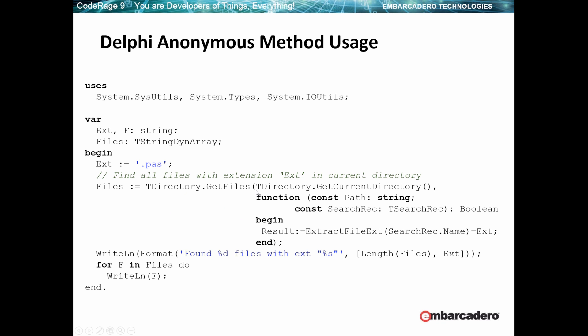That's the example here — you just pass a little function right inside as you're calling getFiles. You have a little function, and that function does a little test. In this case, this function will check that the extension matches a particular extension — pass files. The beauty of this is locality. The function you're writing is right there. You don't have to write a separate callback like the way we used to use function pointers before, with a class and some members. It's all local, very easy. You can read and see what you're doing.